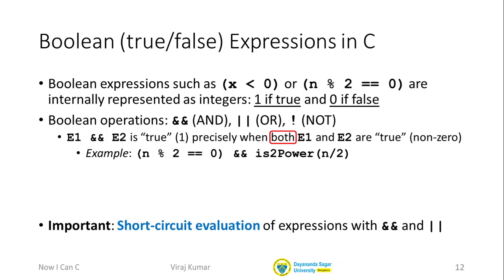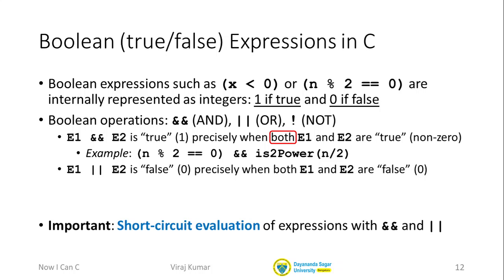The same general idea applies to OR: e1 || e2 is false only when both e1 and e2 are false. The only time it's true is when at least one of e1 or e2 is true. So with short-circuit evaluation, if we evaluate e1 and find it's true, we don't need to evaluate e2 — the overall expression is already true regardless. With both AND and OR we have short-circuit evaluation, and it's important to know because if we don't understand it we may end up with errors.